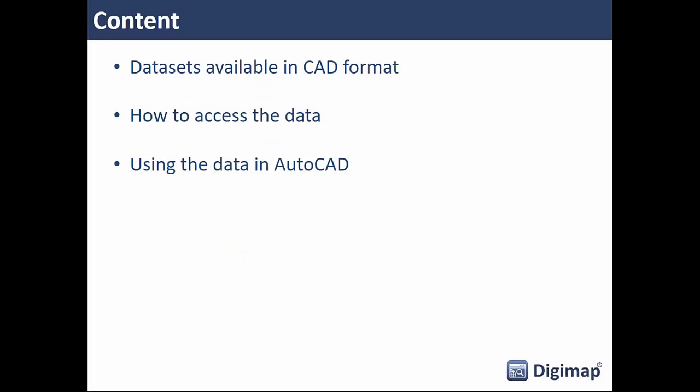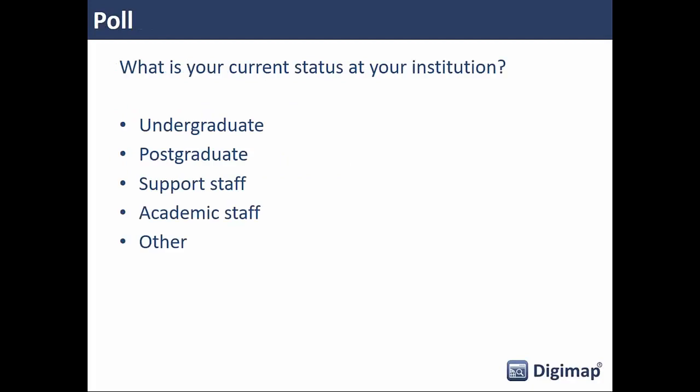Today we're going to look at three things to do with CAD and Digimap: first, what datasets are available in native CAD formats; second, how you access and download that data; and third, how we use that data in AutoCAD.